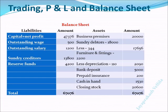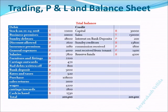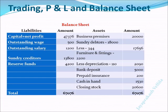Next, sundry creditors is 13,800 as per the trial balance. Reserve funds are also like capital, to be utilized for the firm, so that is also a liability. All entries on the liability side are now made.